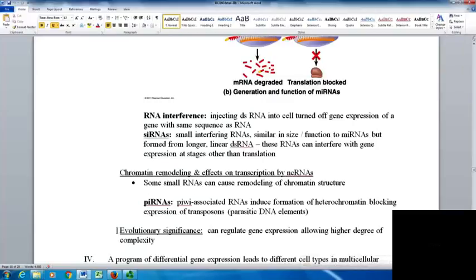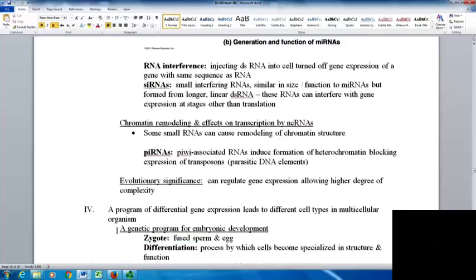Chromatin remodeling can affect transcription by non-coding RNAs. Some small RNAs can remodel chromatin structure. Piwi-associated RNAs induce formation of heterochromatin, which blocks the expression of transposons, which are parasitic DNA elements. The evolutionary significance is that regulating gene expression allows a much higher degree of complexity.